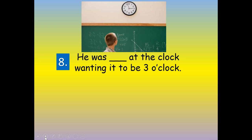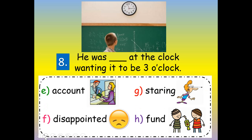Number eight: he was blank at the clock, wanting it to be three o'clock. He was a-count... disappointed... staring... or funned at the clock wanting it to be three o'clock. Staring — he was staring at the clock wanting it to be three o'clock. S-T-A-R-I-N-G, staring.